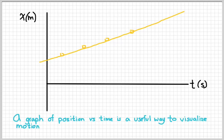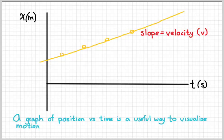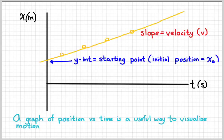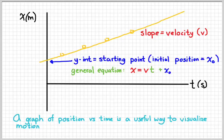If we have a few data points and draw a best-fit line, the slope — which is the change in x over the change in t — tells us the velocity. The y-intercept tells us what the position is at time equals zero, which we call the initial position, given the symbol x with a subscript zero (x-naught). So the general form of our equation in y = mx + b form will be x equals velocity times time plus the initial position. Here x and t are variables, while v and x-naught are numbers with units.